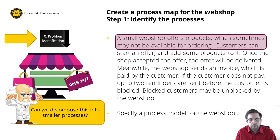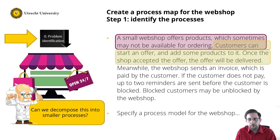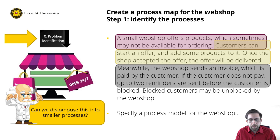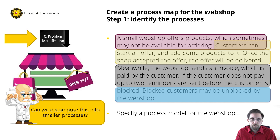Then, notice that there is a quite elaborate part about how invoices to customers are processed by the organization, and because this is so elaborate, I make it a process as well. There is also something stated about customers that can be blocked and unblocked. Hence, there is also a customer process. So we have identified four processes: the product process, the offer process, the payment process, and the customer process.